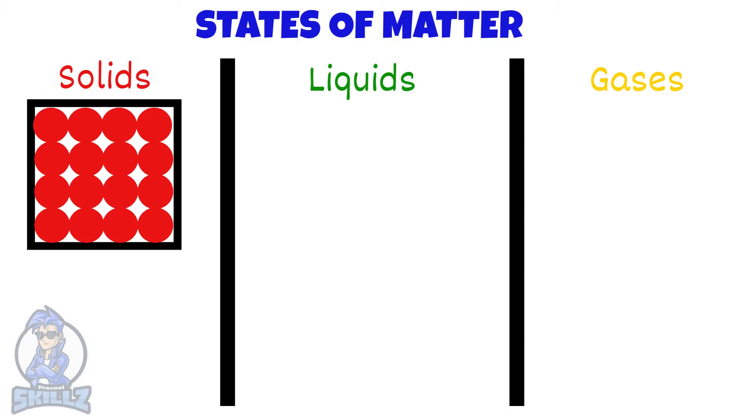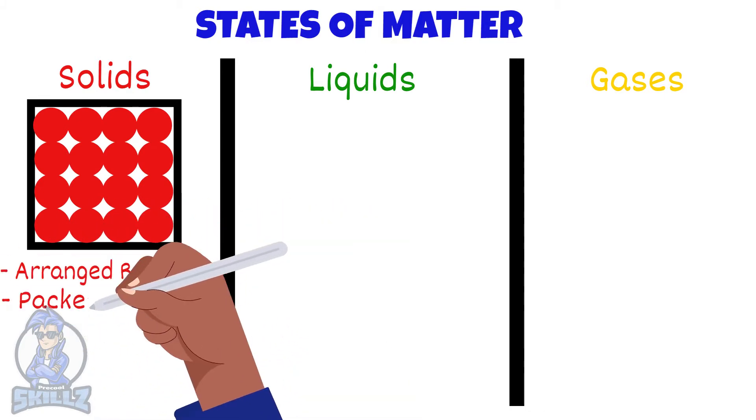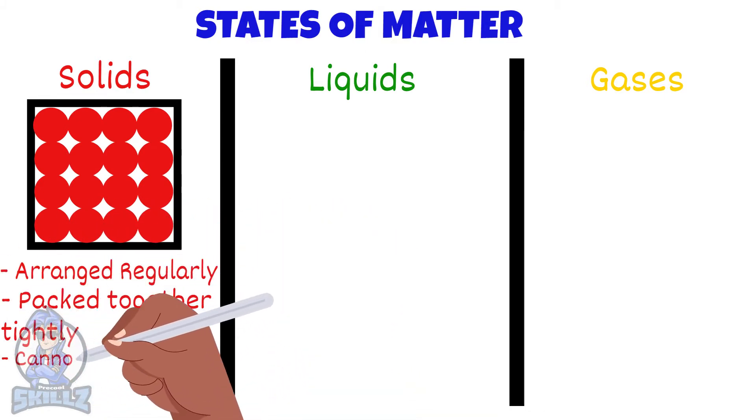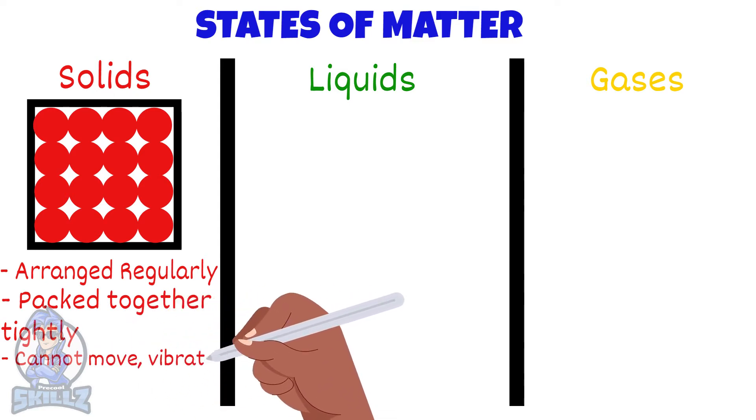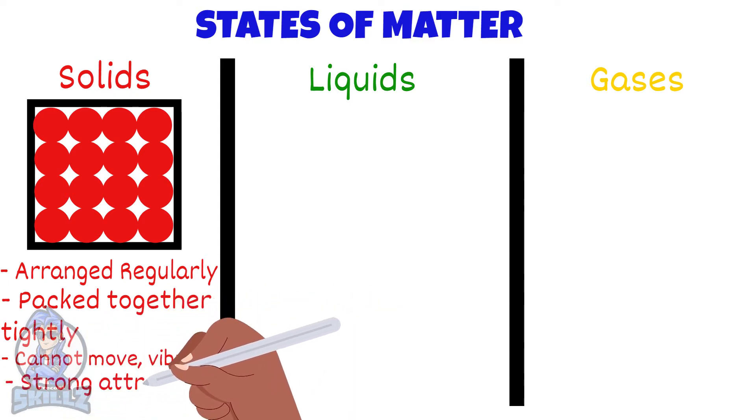A solid's particles are arranged regularly and packed together tightly. These particles can only vibrate, they cannot move around. They have strong attraction forces between the particles.